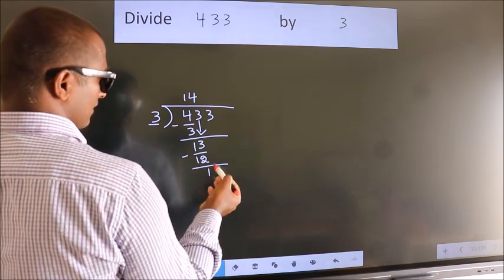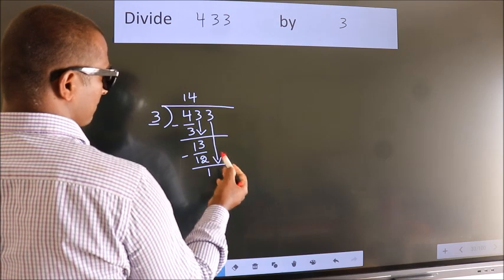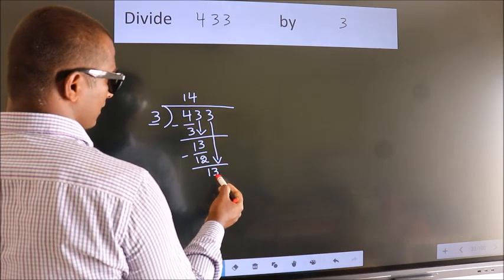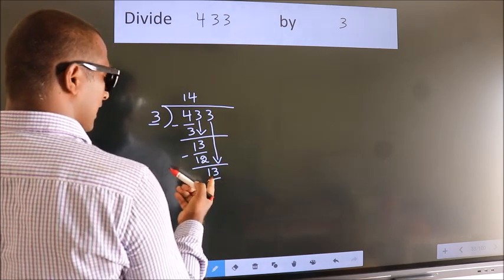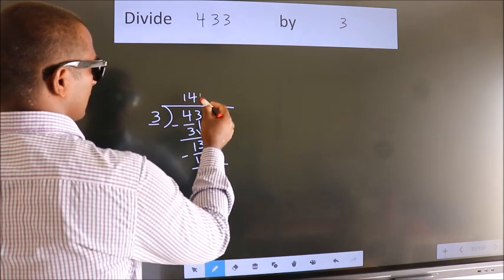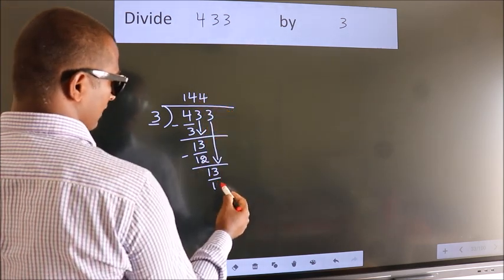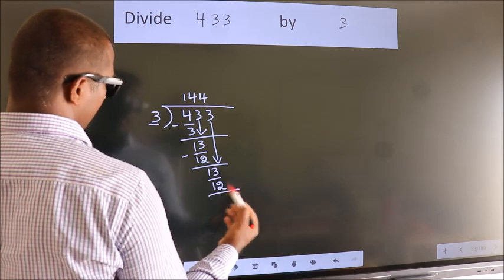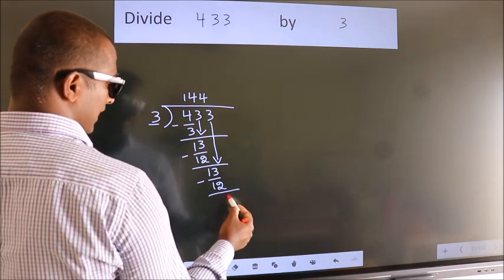After this, bring down the beside number. So, 3 down. So, 13. A number close to 13 in 3 table is 3 fourths, 12. Now, we subtract. We get 1.